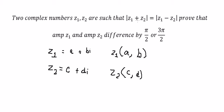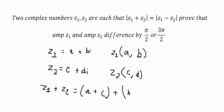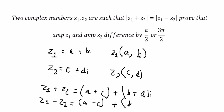So we have this equation here. z1 plus z2 gives us (a plus c) and (b plus d). And z1 minus z2 gives us (a minus c) and (b minus d).